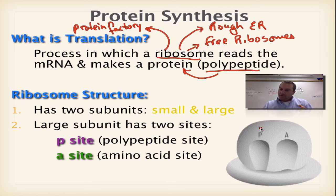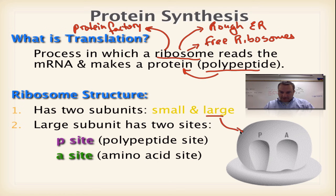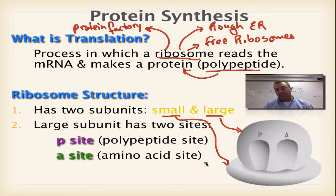A great way to remember the ribosome is to think of a hamburger bun. The top bun has three bites out of it — we're going to show you what the third one is in just a second. And then it's got a smaller bun. They got really neat names: the top part is called the large subunit, and the smaller part down here is called the small subunit.